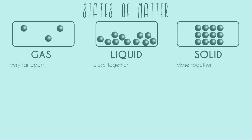In this video, I'll be going over the three states of matter and some important differences between all of them. The three main states of matter are gas, liquid, and solid. Some classes may just go over these three, and some may also talk about plasma, but the main three are gas, liquid, and solid.